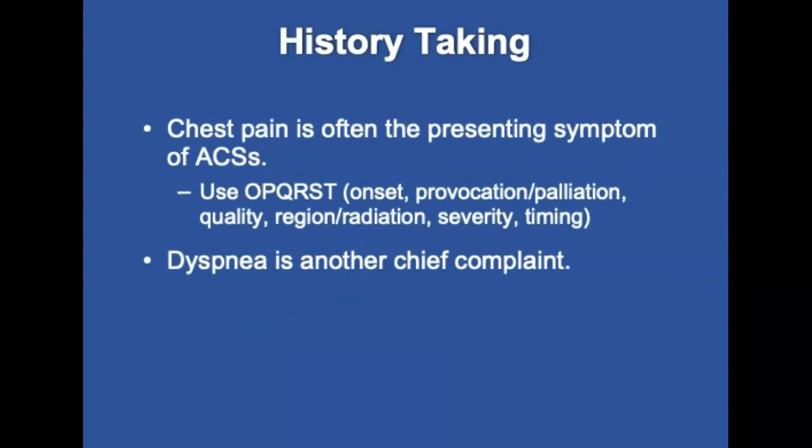Common chief complaints in a patient experiencing ACS include chest discomfort, dyspnea, fainting, palpitations, and fatigue. Chest pain or discomfort is often the presenting symptom in a patient with ACS. The OPQRST mnemonic — onset, provocation/palpation, quality, region/radiation, severity, and timing — is used to elaborate on the patient's complaint.